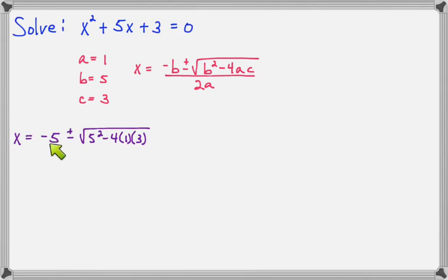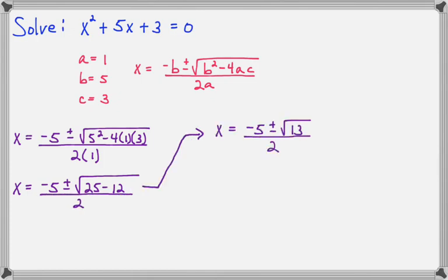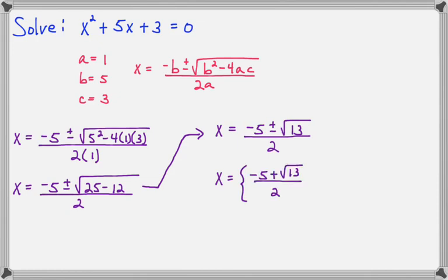Here I've got negative b plus or minus the square root of b squared minus 4 times a times c, all over 2a. I plug it in and don't do any calculations in my head — I just plug all the a's, b's, and c's in so I can see how everything fits together, then simplify. So 5 squared is 25, minus 4 times 1 times 3 gives minus 12, all over 2. Then 25 minus 12 makes 13, and since 13 cannot be simplified, this is the final answer: negative 5 plus square root of 13 all over 2, and negative 5 minus square root of 13 all over 2.